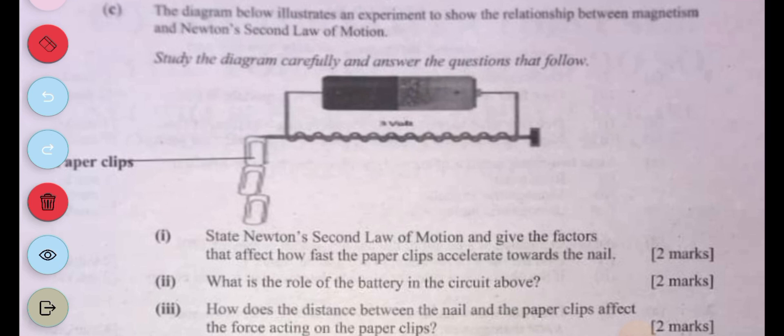Question two: What is the role of the battery in the circuit above? The role of the battery is it provides electrical energy to create a magnetic field which turns the nail into an electromagnet.